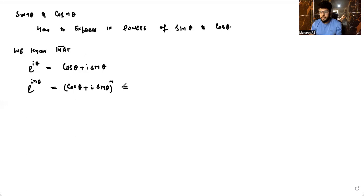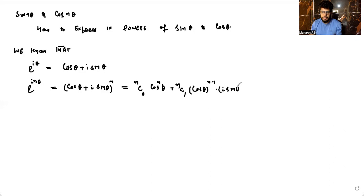Now the right hand side is going to be expanded using the binomial theorem. So we will get: nC0·cos^n(θ), plus nC1·cos^(n-1)(θ)·i·sinθ, plus nC2·cos^(n-2)(θ)·(i·sinθ)^2, plus so on.